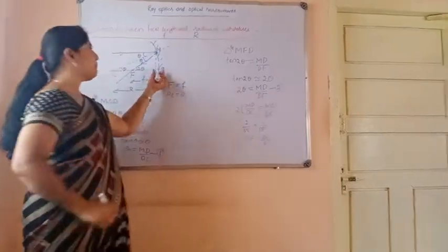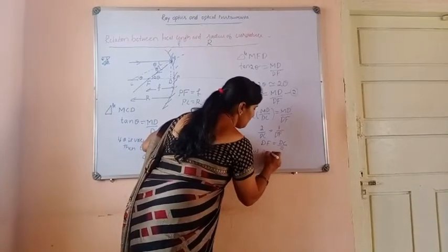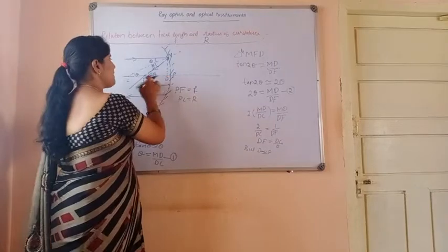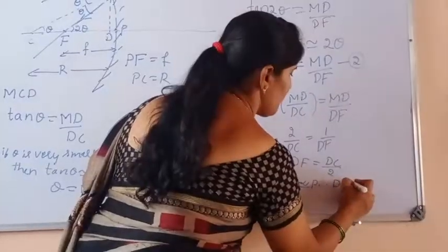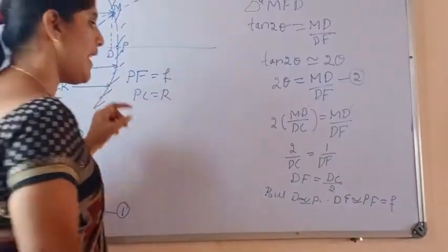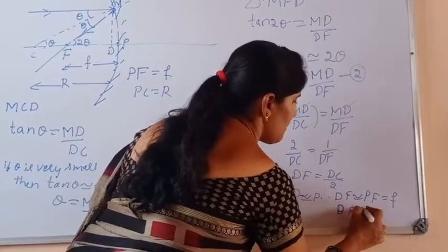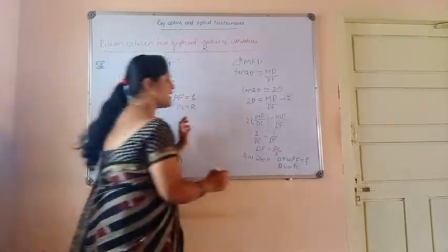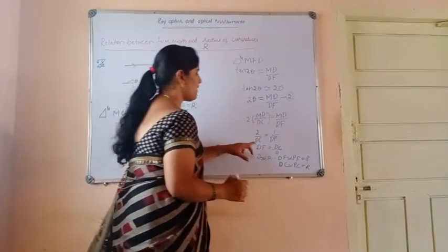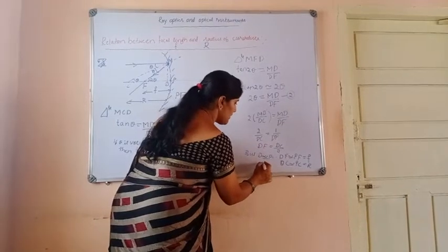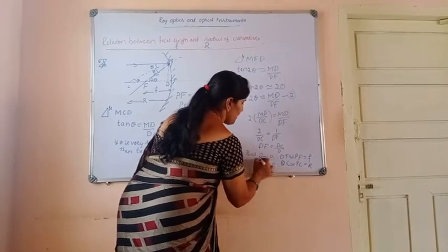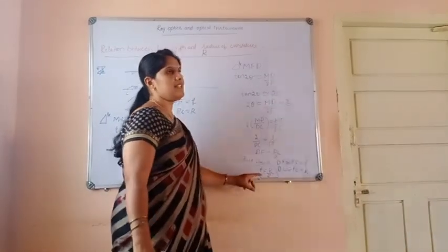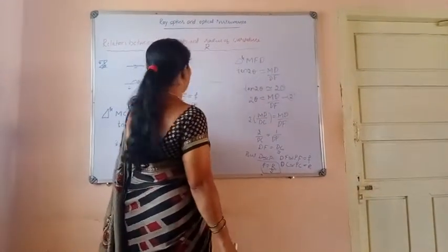Since D is very close to P, DF is approximately equal to PF, which equals focal length f. And DC is approximately equal to PC, which equals R. Therefore the equation becomes: f equals R by 2. This is the famous relation between focal length and radius of curvature — focal length is half the radius of curvature. We can also write this as R equals 2f. This is a very important derivation which carries 3 marks in your exam.